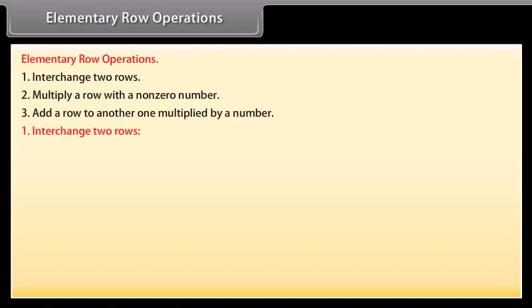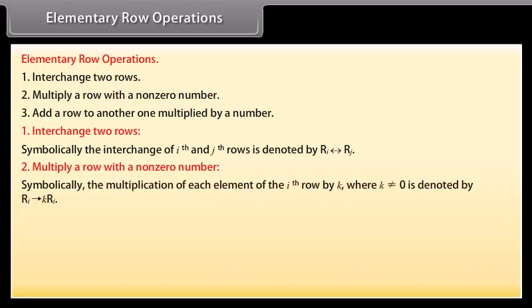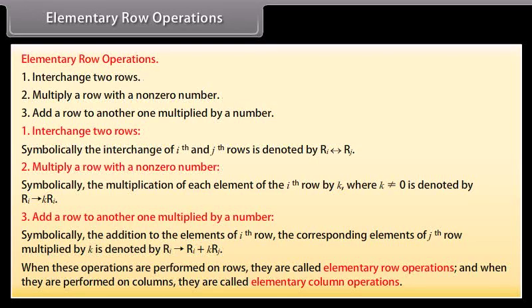Let us go through the elementary row operations one by one. The interchange of the i-th and j-th rows is denoted symbolically as given. The multiplication of each element of the i-th row by k (where k ≠ 0) is denoted symbolically as given. The addition to the elements of the i-th row of the corresponding elements of the j-th row multiplied by k is denoted as given. When performed on rows, these are called elementary row operations; when performed on columns, they are called elementary column operations.